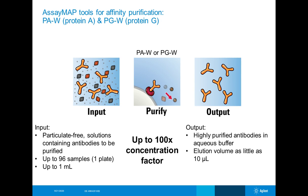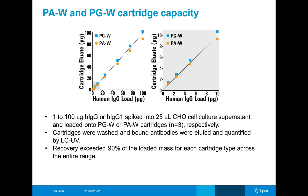Now I'll dive into the workflows. The first is affinity purification using protein A or protein G cartridges. It's very simple: bind, wash, elute. You can use up to 1 mL of your sample — it needs to be particulate-free so you don't clog the frits. Up to 96 samples can be processed. You can elute in as small as 10 microliters, so if you use 1 mL of sample and elute in 10 microliters, you've achieved a 100-fold concentration of a highly purified antibody in aqueous buffer ready for downstream workflows.